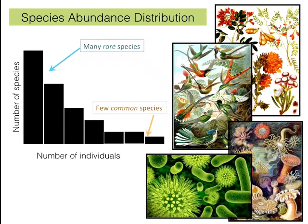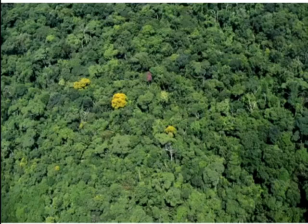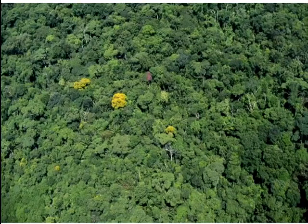I would like to start by talking about one of the few general laws in ecology, and that is the pattern that describes the species abundance distribution. No matter if we are studying communities of plants, birds, invertebrates, or bacteria, what we often find is that they consist of many rare species and only few common species. And in tropical systems, where I have spent most of my time doing research, these patterns are even more pronounced.